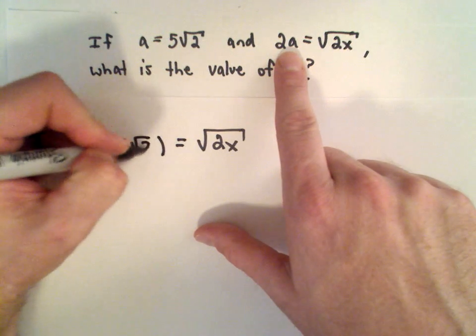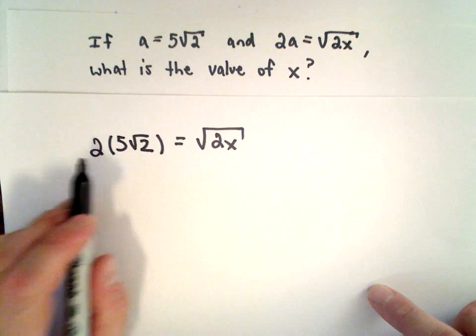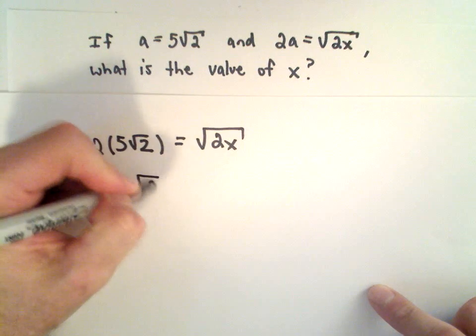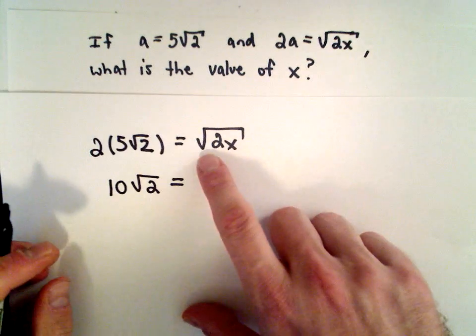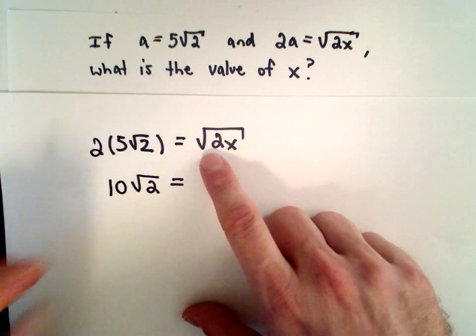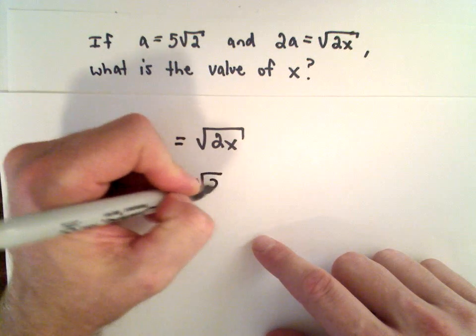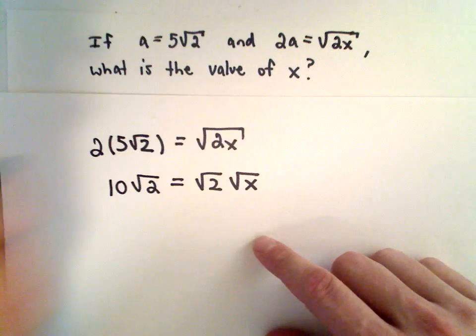Now I'm going to simplify the left side. 2 times 5 is 10 multiplied by the square root of 2. We have the square root of 2x on the right side. I can break that up as the square root of 2 multiplied by the square root of x.